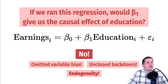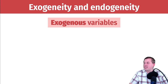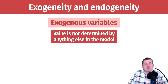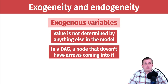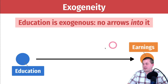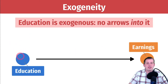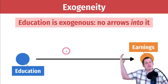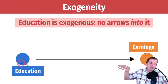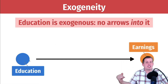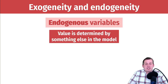Before we define endogeneity, let's define exogeneity. An exogenous variable means its value is not determined by anything else in the model. If you're thinking about a DAG, it means there are no arrows coming into it — the node stands alone, nothing influences that node. An endogenous variable, by contrast, has its value determined by something else in the model, meaning there are arrows coming into that node.